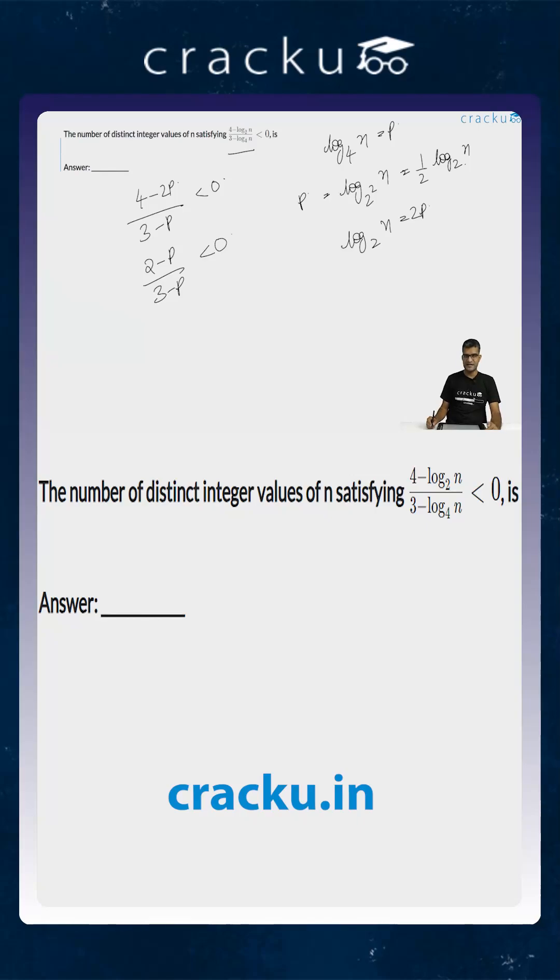We can multiply both sides by 3 minus p whole square to remove the denominator, and we will be left with 2 minus p times 3 minus p is less than 0, or the value of p belongs to the interval 2 and 3.